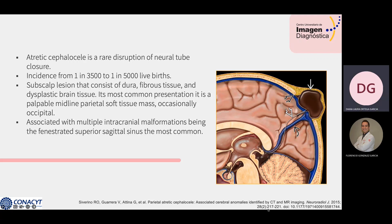It is a small subscalp lesion that consists of dura, fibrous tissue, and dysplastic brain tissue. Its most common presentation is a palpable midline parietal soft tissue mass, occasionally occipital, with a wide range of clinical presentations. It can be associated with multiple intracranial malformations, the most common being the fenestrated superior sagittal sinus.